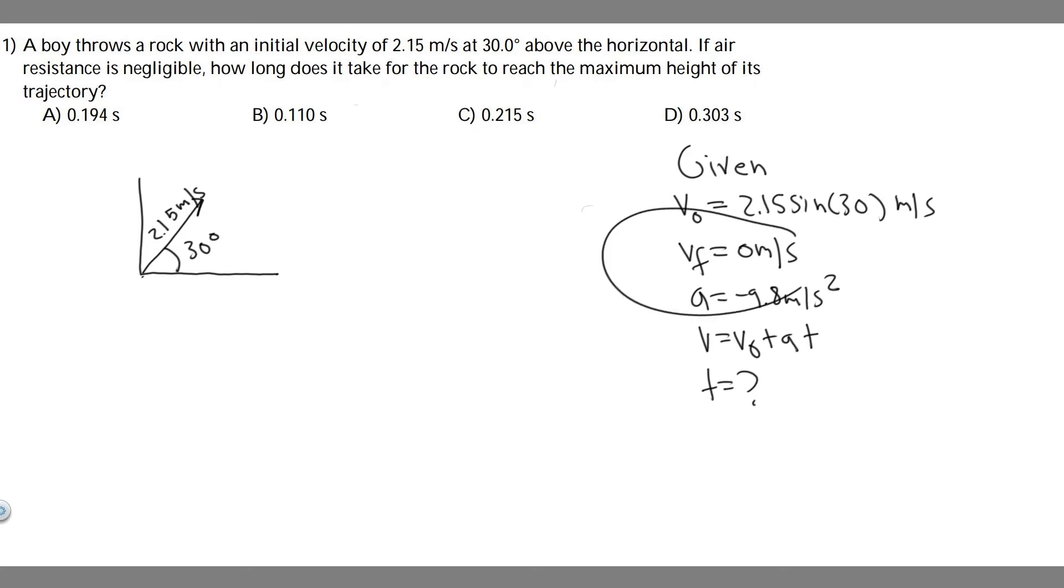In this case, we're going to set v final equal to zero. Keep in mind, we're working in the y direction, so all these variables are in the y direction. Let's talk about what we're given. The v final in the y direction is zero. We know the acceleration in the y direction is -9.8 meters per second squared. That's a constant for every problem like this.